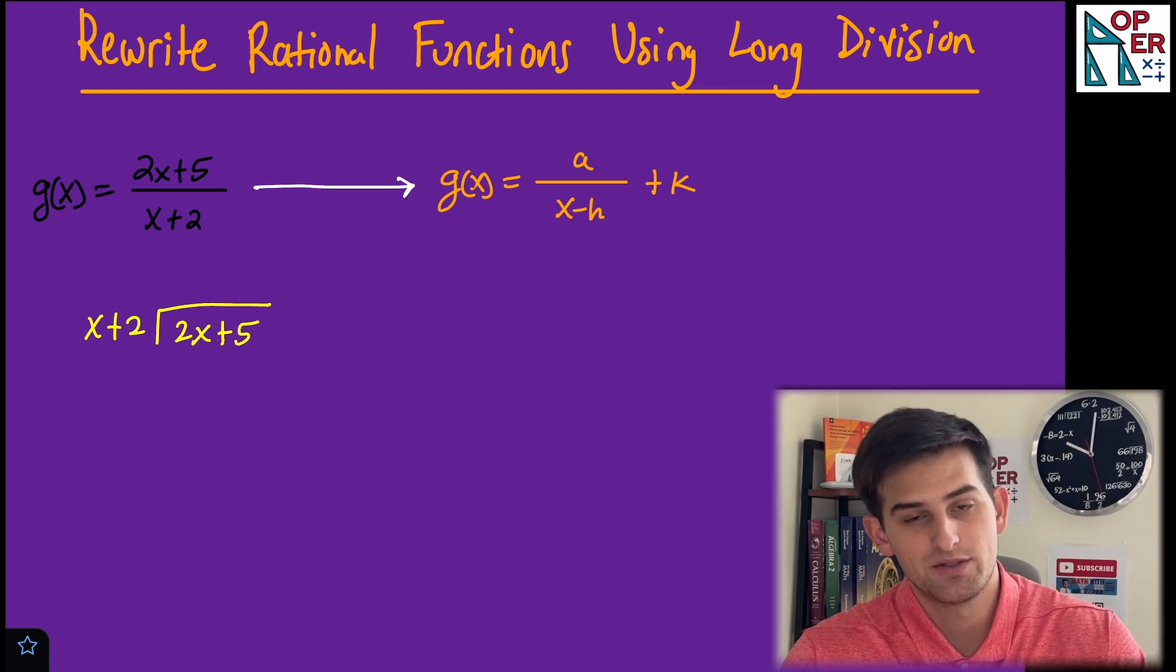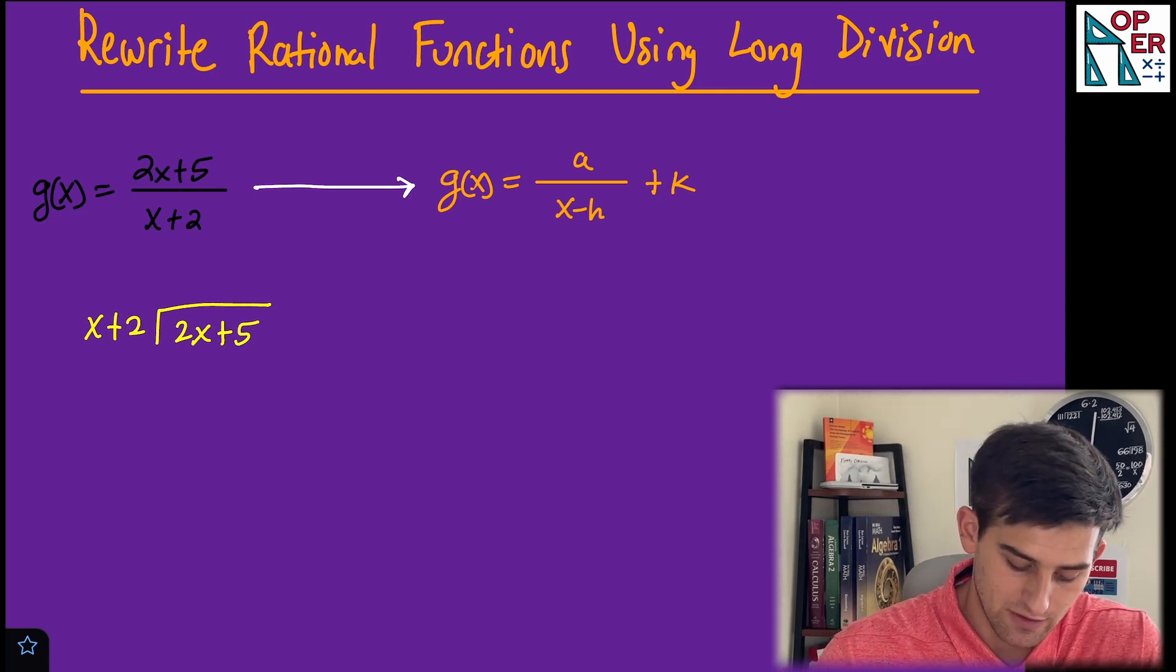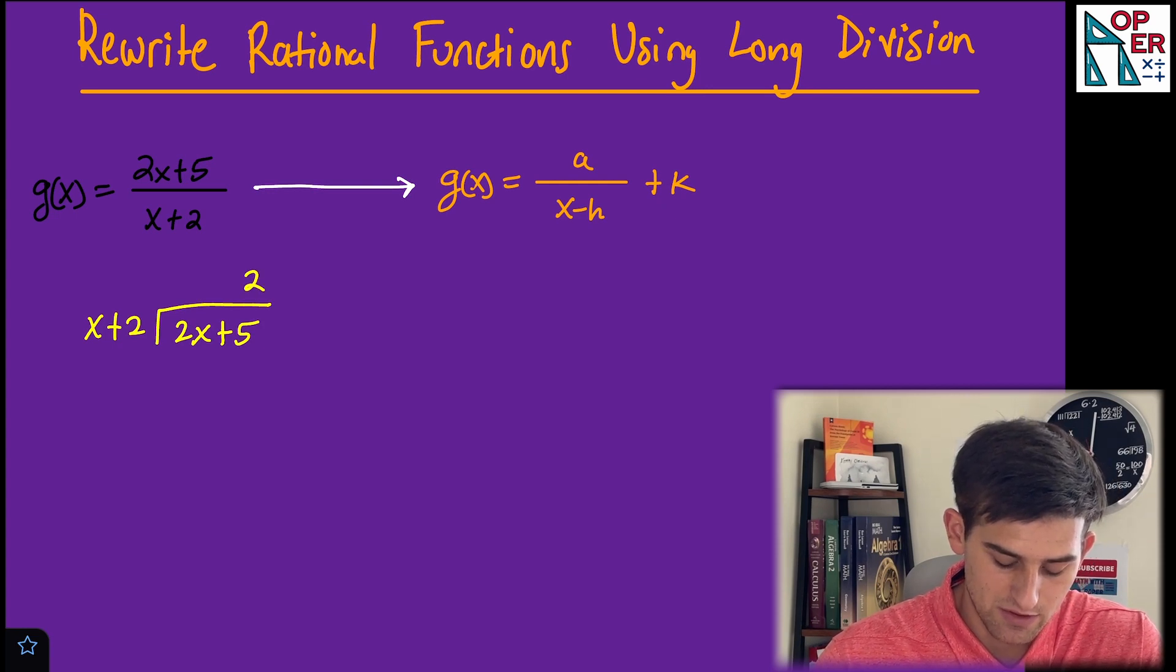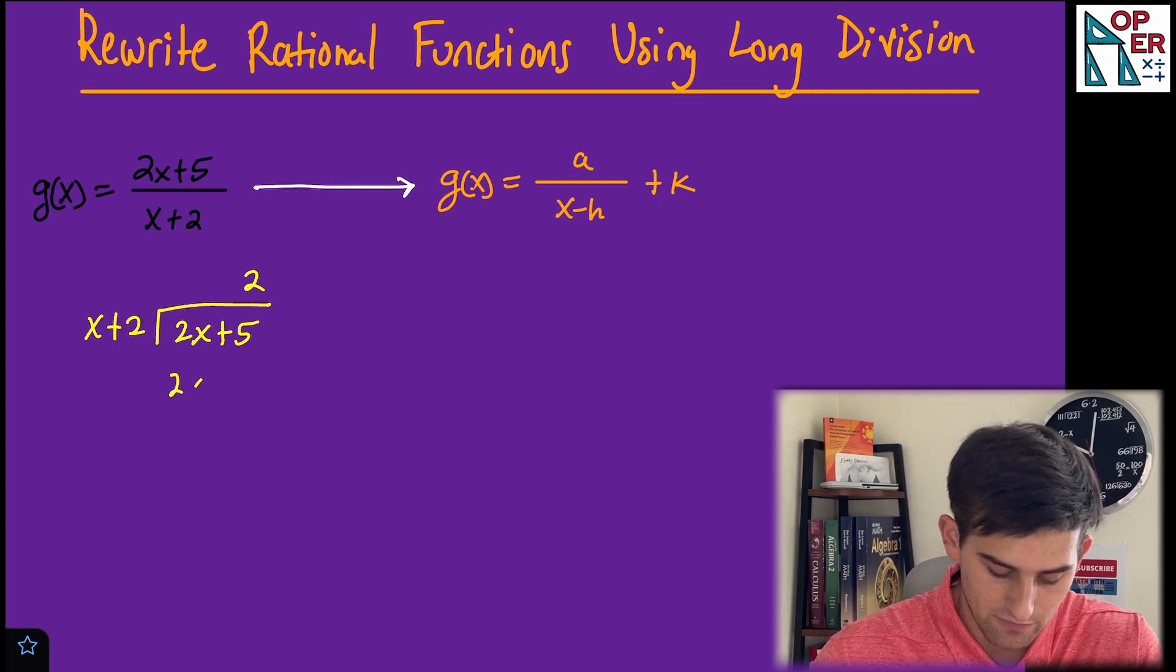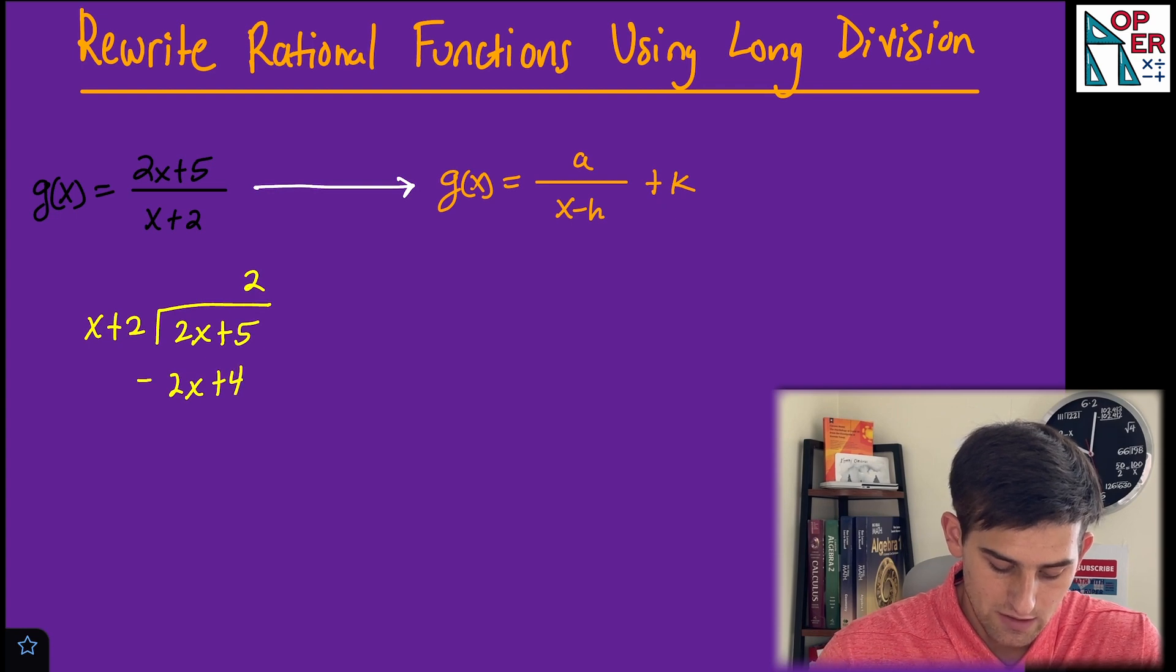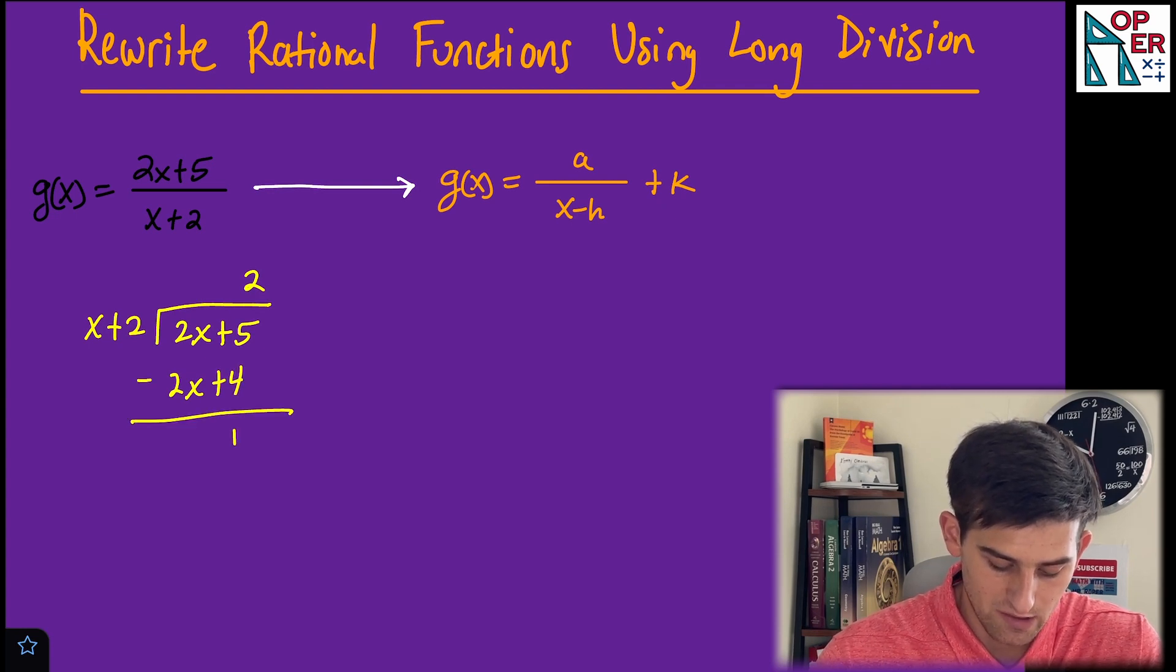How many times will x + 2 go into 2x + 5? That would be 2 times. Two times x + 2, distribute there, we have 2x + 4. Now once we subtract here, we're just left with 1.